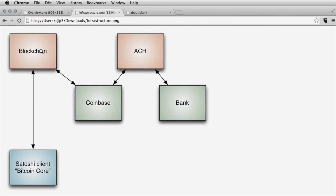The blockchain deals in Bitcoin and ACH deals with dollars. So Coinbase not only keeps a wallet for you — doing the same functions as my local client — but it also enables you to translate from Bitcoin to dollars, in case you want to send dollars out into the banking economy or get money back from it. Coinbase charges a fee for that transaction, and that's their business model.